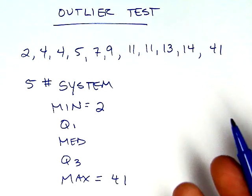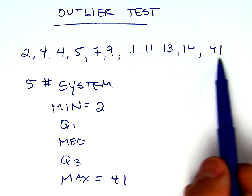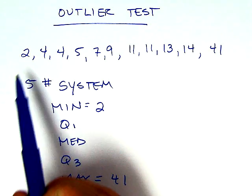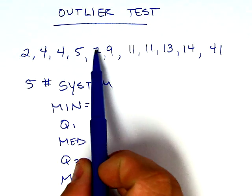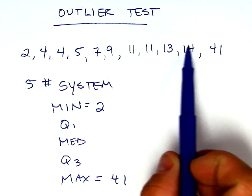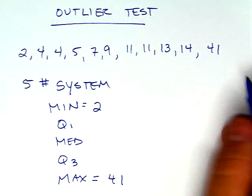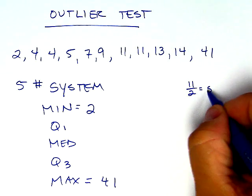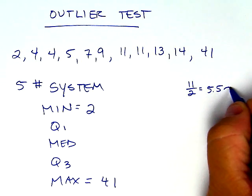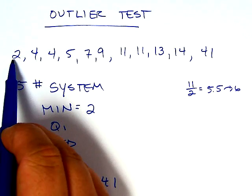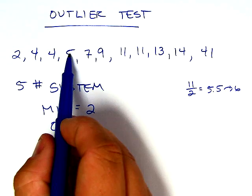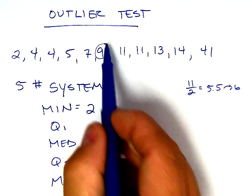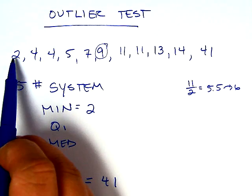Q1, Q3, and the median are a little bit tougher. We have one, two, three, four, five, six, seven, eight, nine, ten, eleven numbers. My little trick is go 11 divided by 2 and that is 5.5, round up to 6. One, two, three, four, five, six—that is the median.